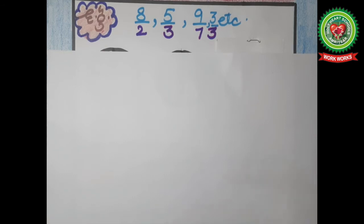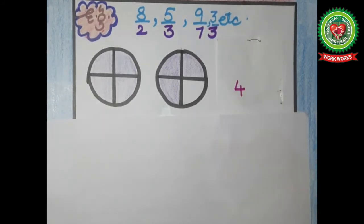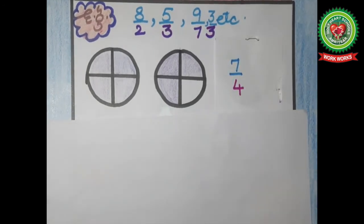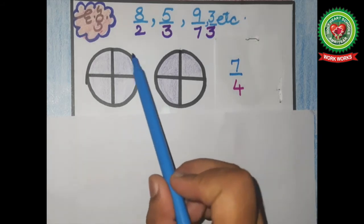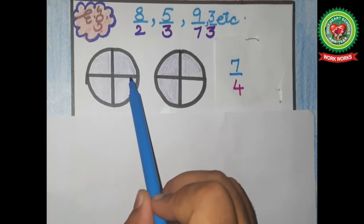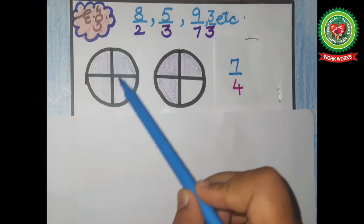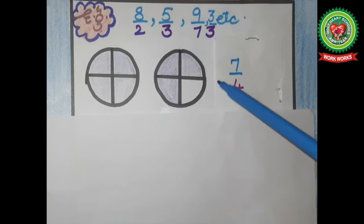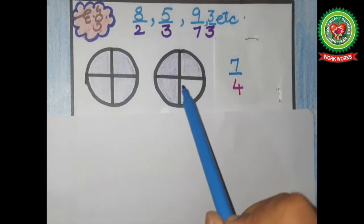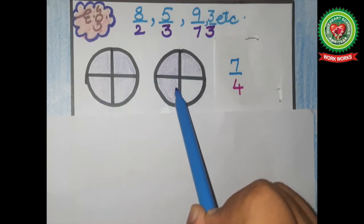Students, suppose I want to draw a figure where the denominator is 4 and numerator is 7. The denominator tells us the total number of parts, so first we draw one circle divided into 4 equal parts. The numerator tells us how many parts to shade. Here 7 parts are needed — first I shade 4 parts. But I need 7, so I draw one more circle and shade 3 more parts: 1, 2 and 3. Total shaded parts are now 1, 2, 3, 4, 5, 6 and 7.